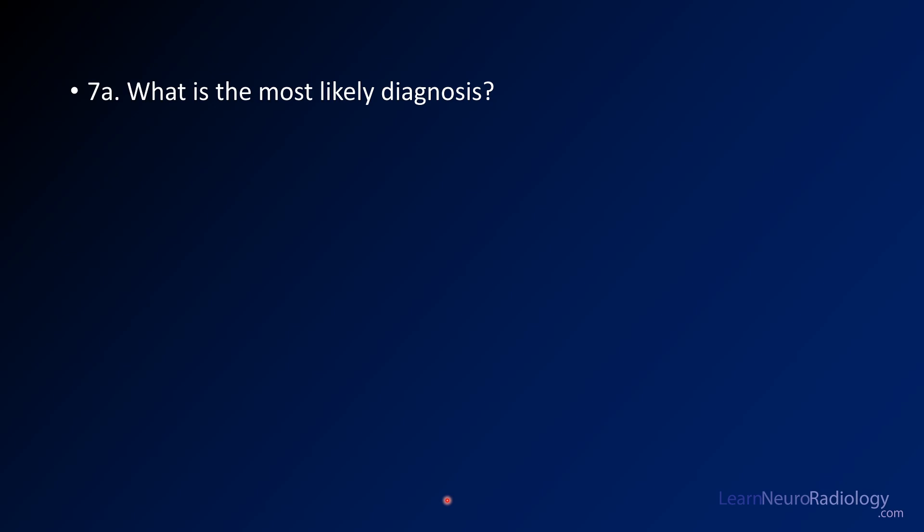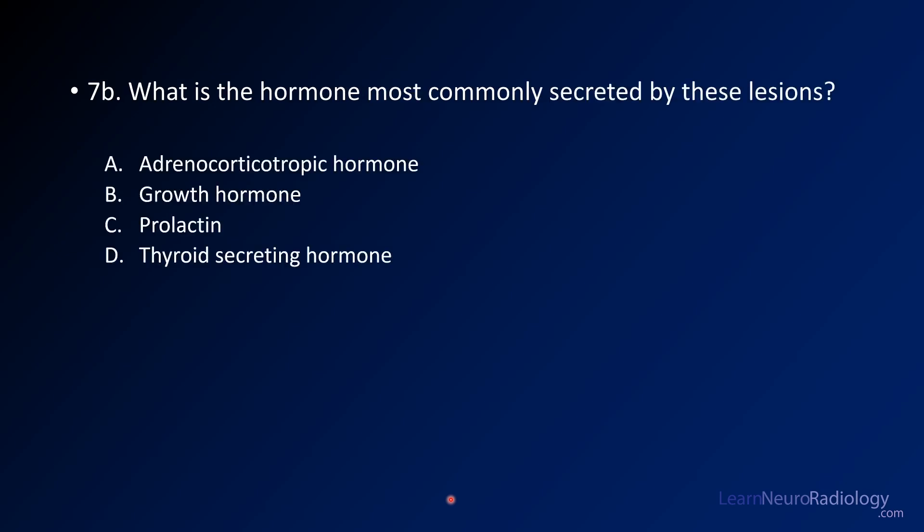Question 7a: what is the most likely diagnosis? And 7b: what is the hormone most commonly secreted by these lesions? That question is tipping you off that this is probably a pituitary adenoma, and from that you have to figure out which is the most common hormone secreted by pituitary adenomas.